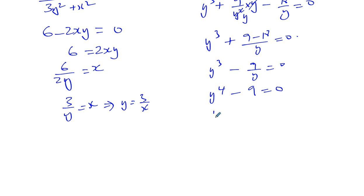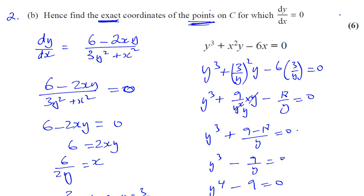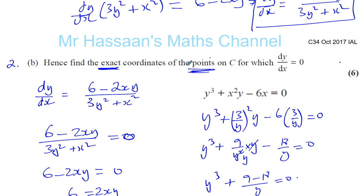Let's get rid of the fraction by multiplying everything by y. You have y to the power of 4 minus 9 equals 0, so y to the power of 4 equals 9.